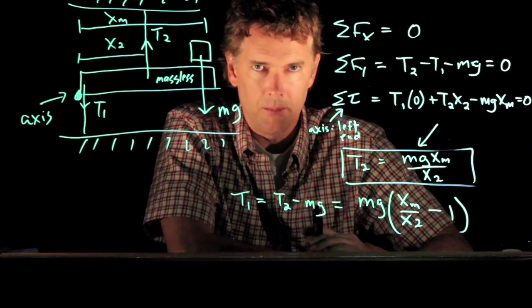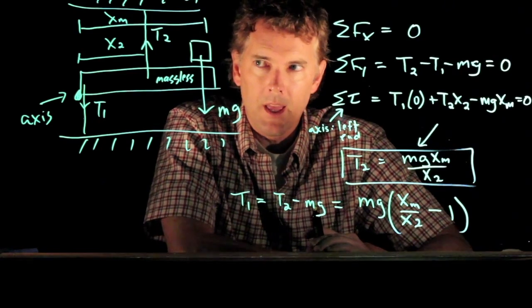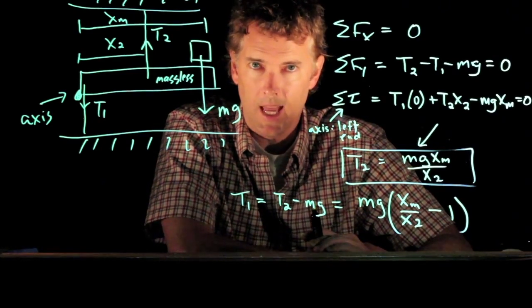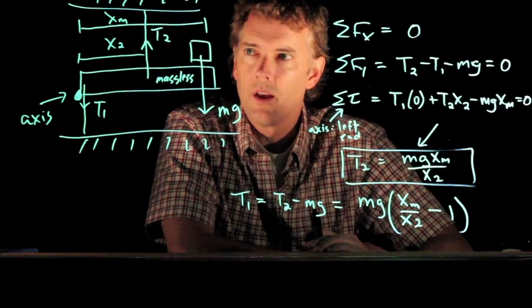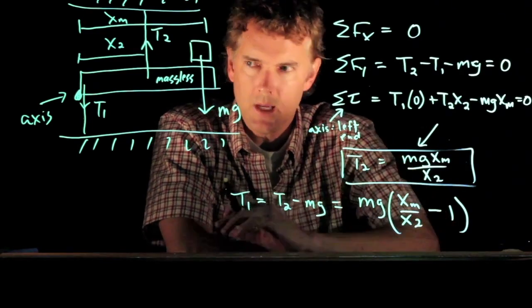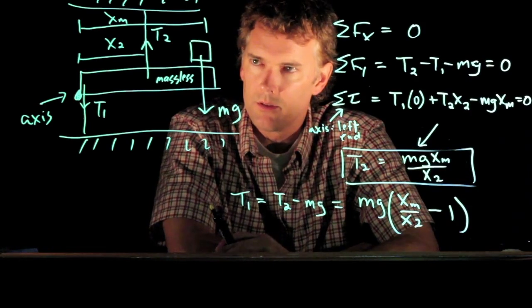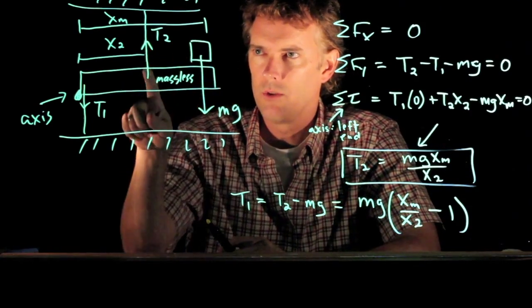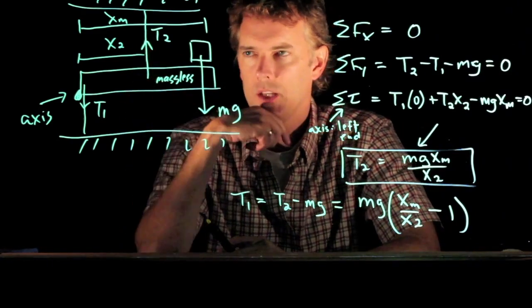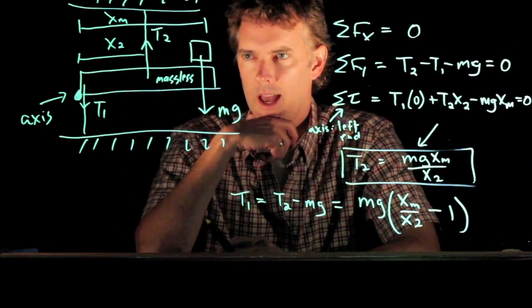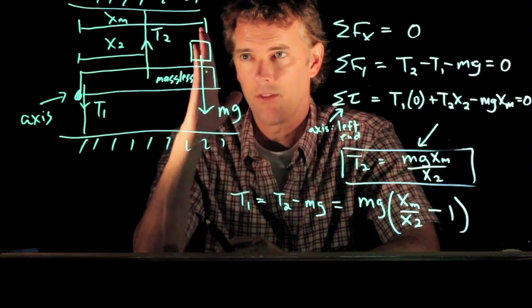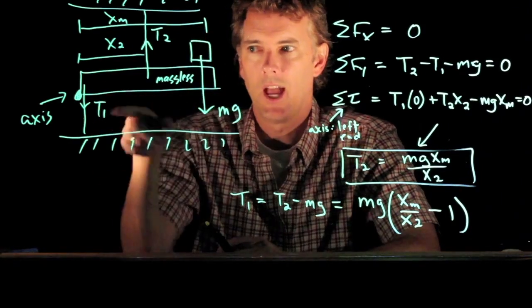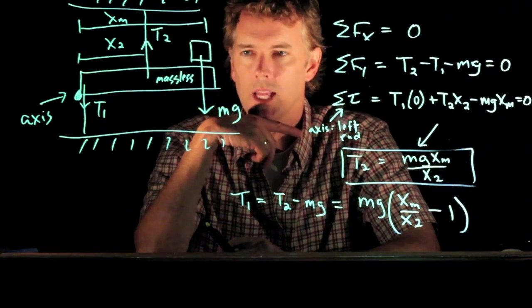And now you can look at the limits. So if xm was equal to x2, then it says that T1 would be zero. And so that's a condition where we moved our mass right to where the cable T2 is attached. And if that is indeed the case, then T2 is holding the whole thing up. It's perfectly balanced. And you need zero tension in T1.